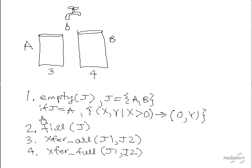The rule for J equal B is very similar to J equals A. It's just that the second variable over here becomes zero instead of the first. Fill likewise is very similar to empty. We set either the first value to three or the second value in the coordinate pair to four. Transfer all and transfer full a little bit more tricky because we need to, especially transfer full, because we need to make sure that we don't overflow the target container.